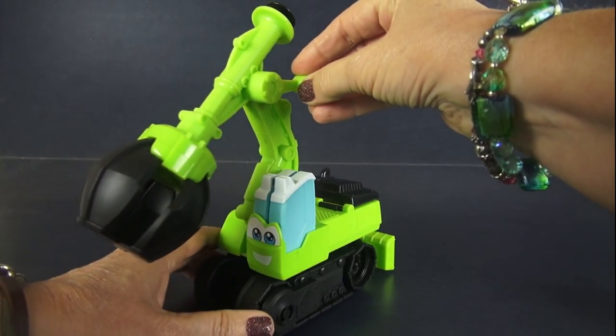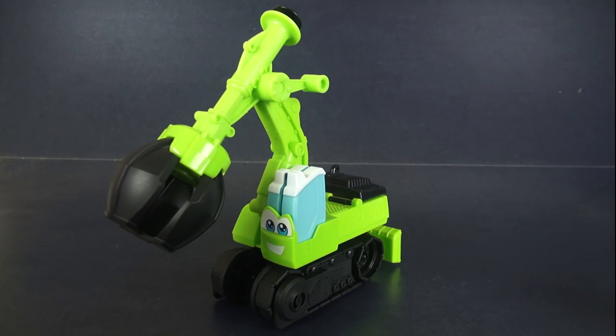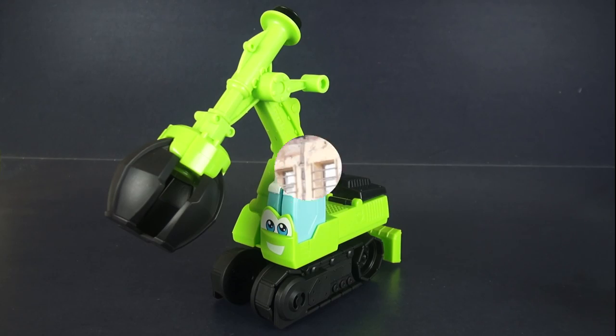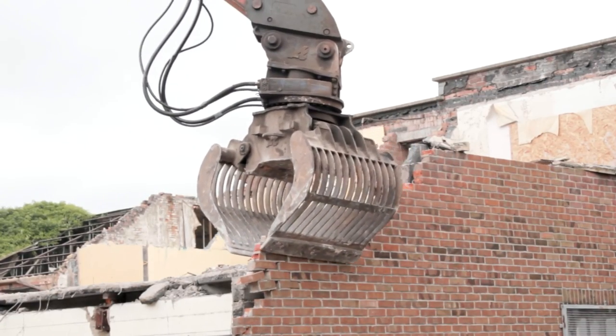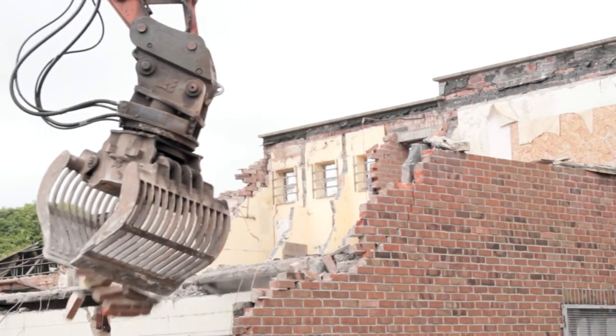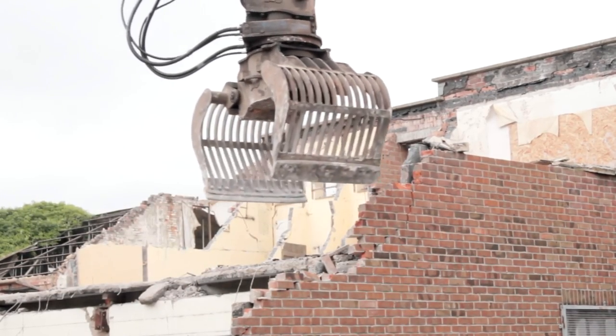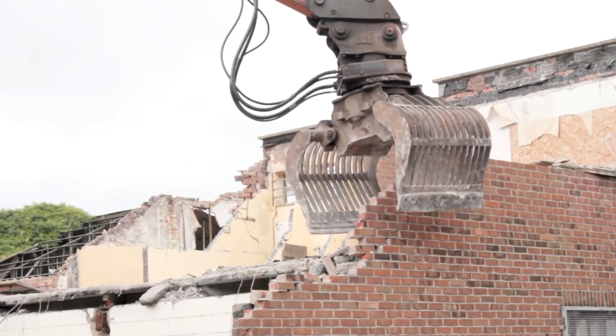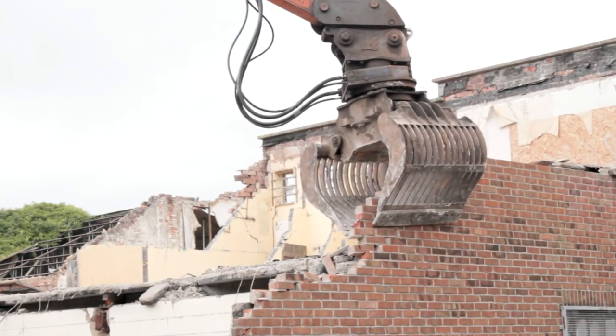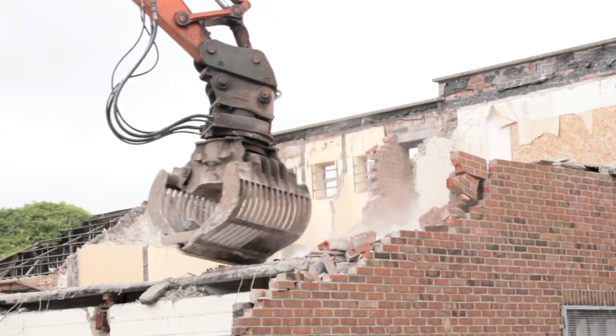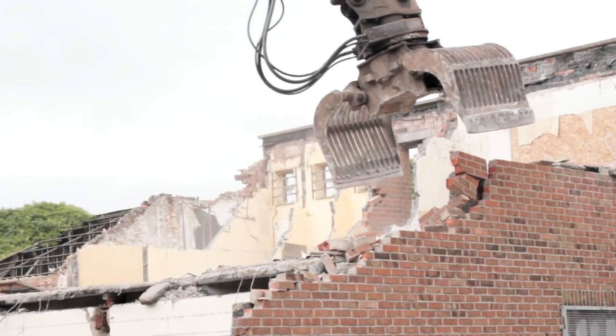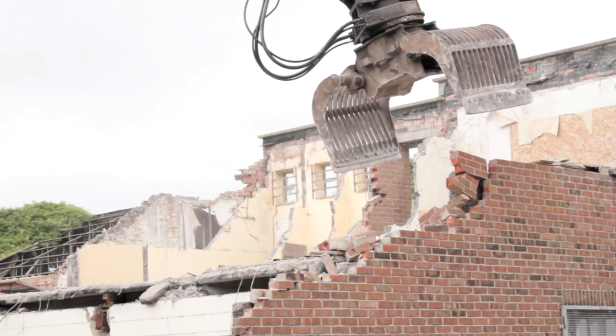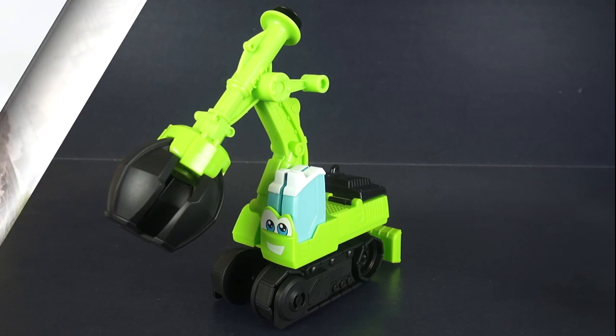And have you ever seen one of these in real life? Well, I'll tell you what. Let's look at a video of a claw attachment tearing down a brick wall. Look at how easily that large claw can take down a brick wall. I bet that makes the job a lot faster and a lot easier. They'll probably tear it down and then build something brand new. So, look how hard these things can work.